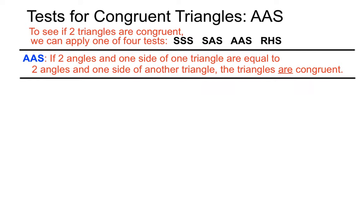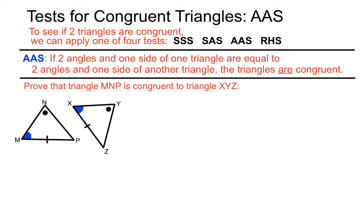This test states that if two angles and one side of a triangle are equal to two angles and one side of another triangle, the triangles are congruent. Let's look at an example. We're supposed to prove that triangle MNP is congruent to triangle XYZ. We have to list information geometrically and see if it adds up to enough to pass a test for congruent triangles.